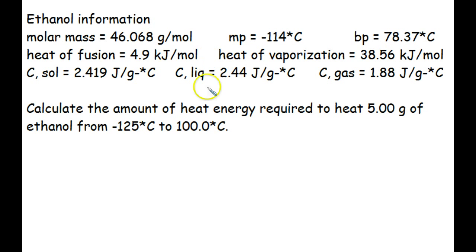So first question you should ask yourself is what phase is it in? It's starting from negative 125 degrees Celsius. Well, the boiling point is negative 114. So that means that we have solid ethanol. And before anything else can happen, we have to heat it from negative 125 degrees Celsius to the melting point, negative 114 degrees Celsius.